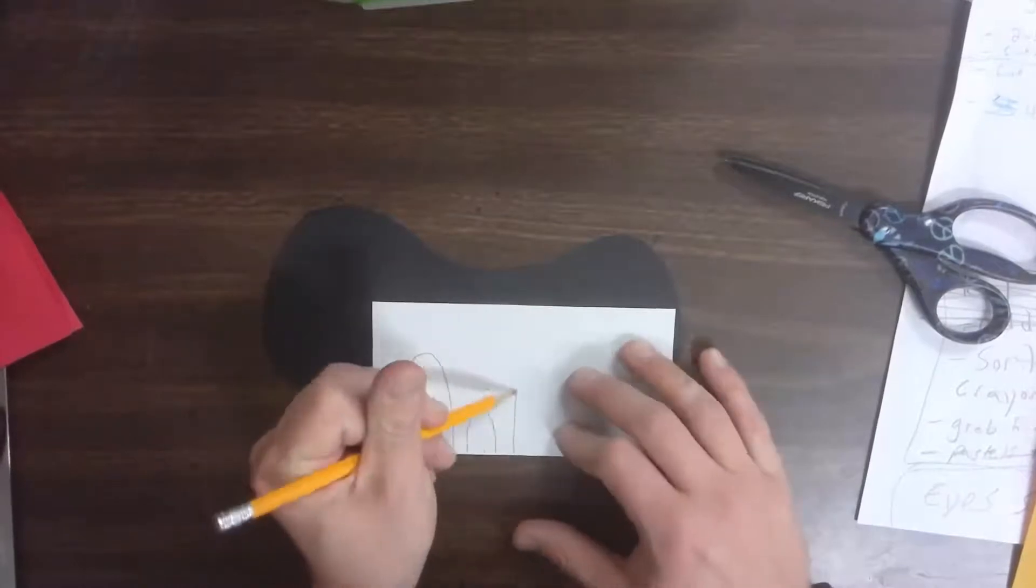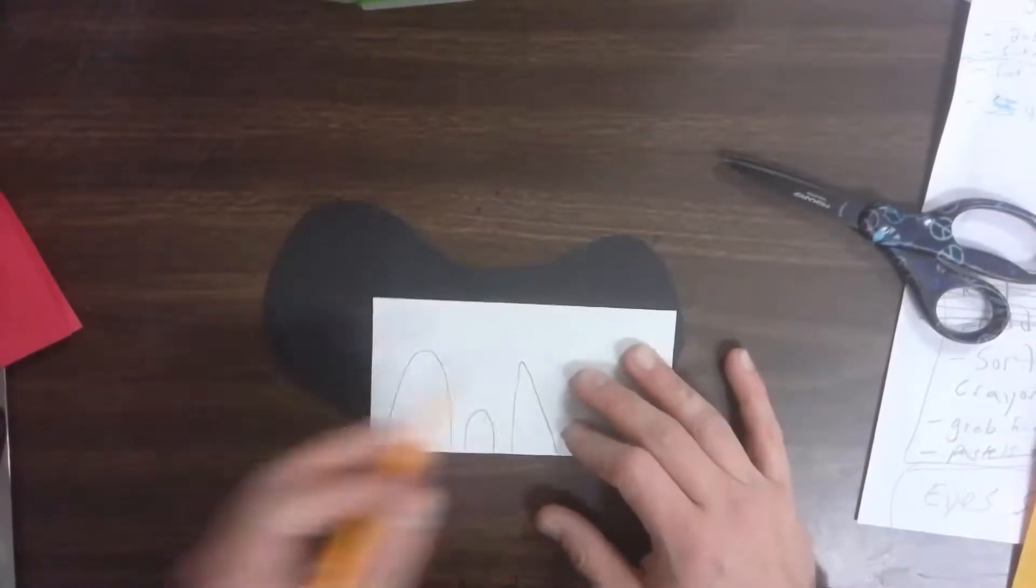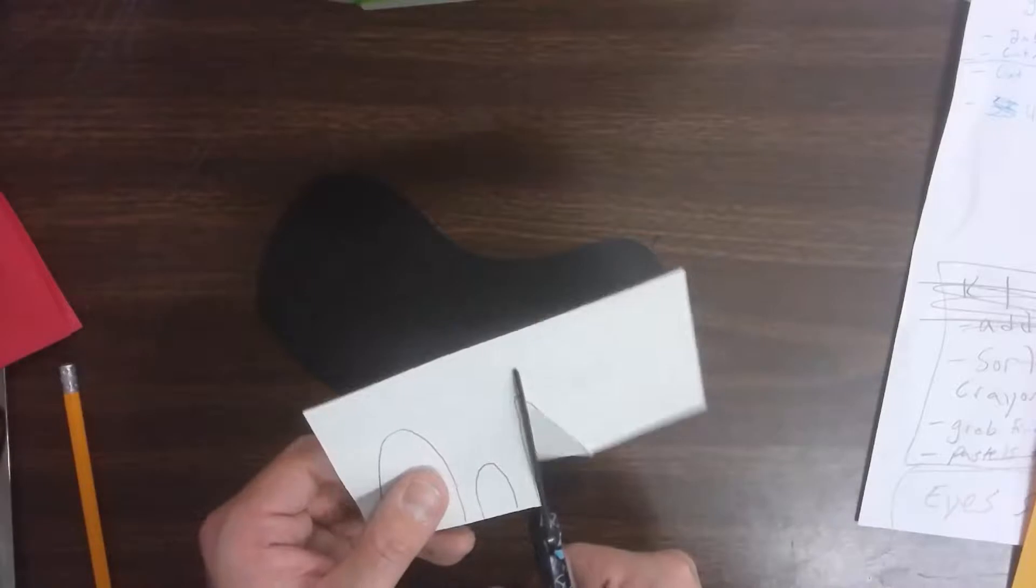If it helps you to draw them first, maybe some are pointy, go for it. Otherwise you can just try to simply cut them right out. So I'm going to try my best to cut these out. Turn my paper around.